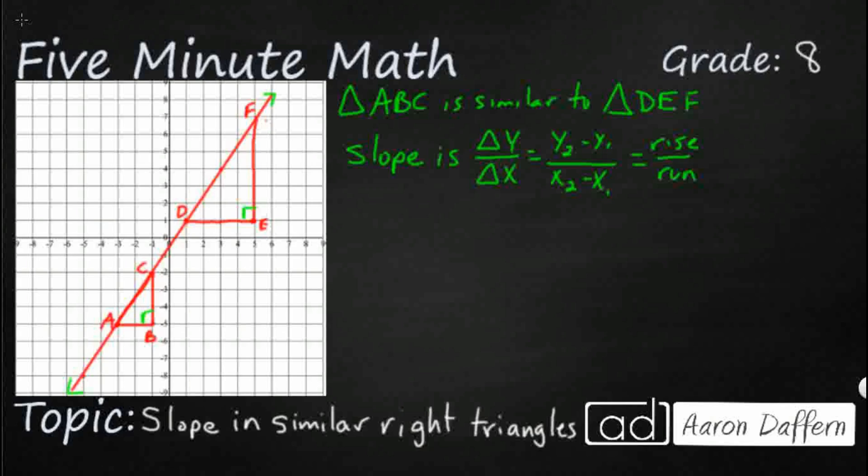So let's see if this is actually true. Are the two slopes the same? Not just proportional - are they actually the same? So let's find the slope of the smaller one first. So we're going to find the slope of triangle ABC.